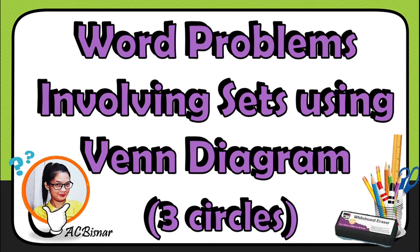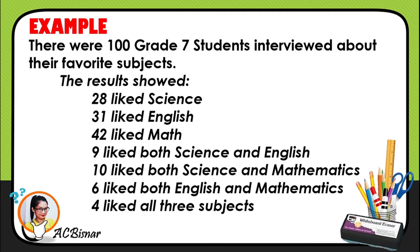This lesson is about word problems involving sets using a Venn diagram with three circles. The given problem is: there were 100 grade 7 students interviewed about their favorite subjects.